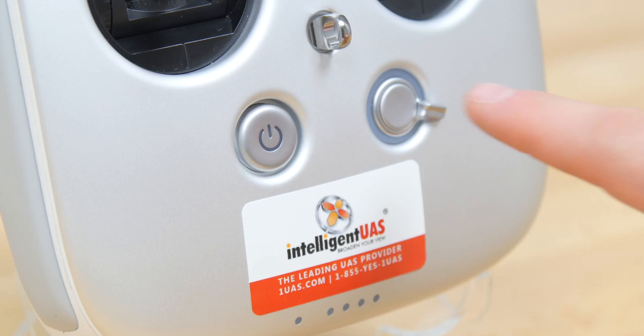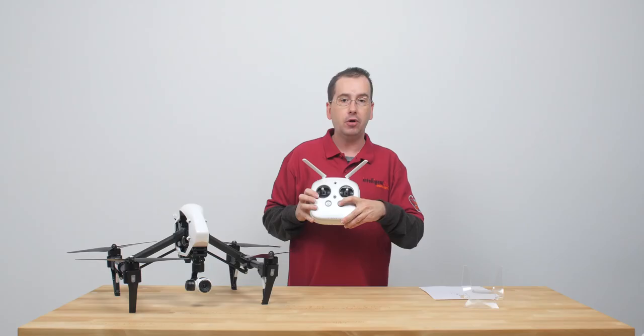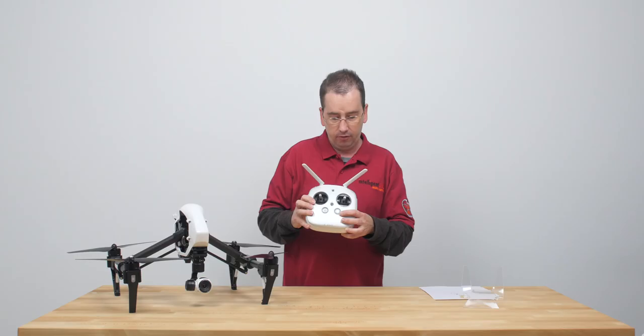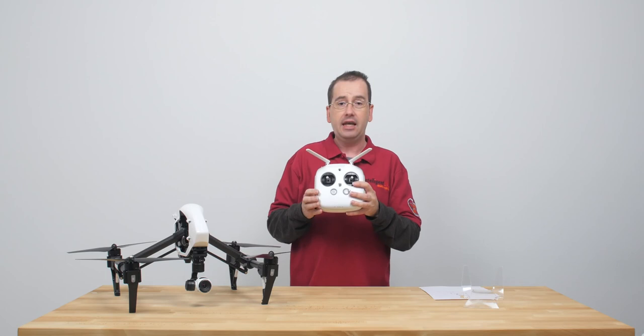We have a return to home switch, which is here. We just click and this will bring the helicopter back to us. We have a transformation switch which will allow us to flip up the legs and flip the legs down. So this gets the legs and the props out of the view of the camera.